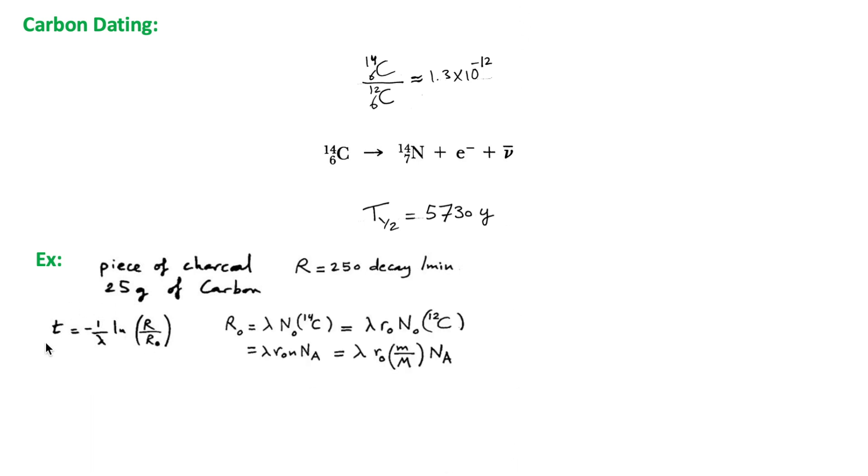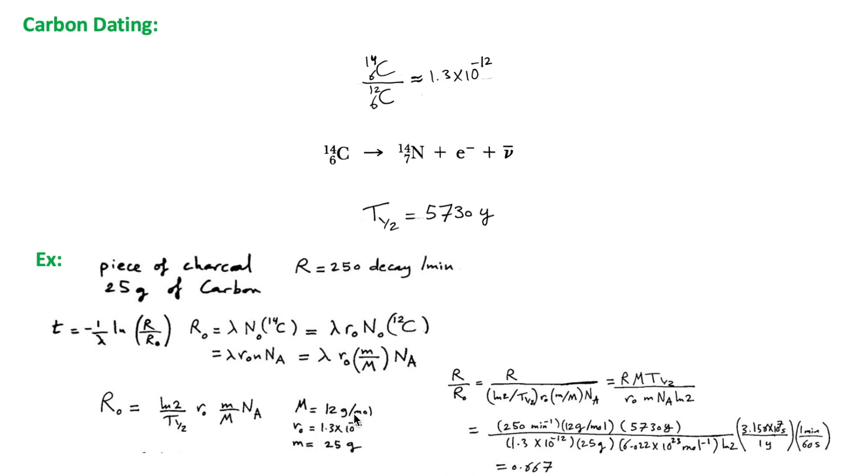We use this equation. We want to find R over R naught. R naught equals lambda n naught, the number of radiocarbon nuclei. This number is related to the number of ordinary carbon through this ratio. So it equals R naught n naught. This equals the number of moles times Avogadro's number. The number of moles equals the mass over the molar mass, which is 12 grams per mole.